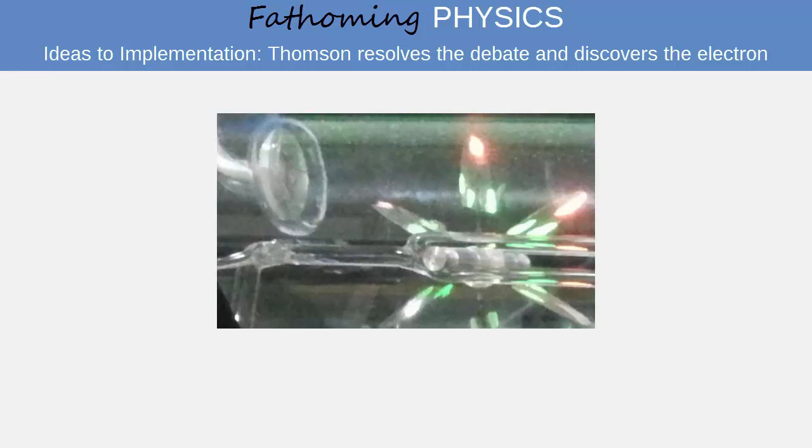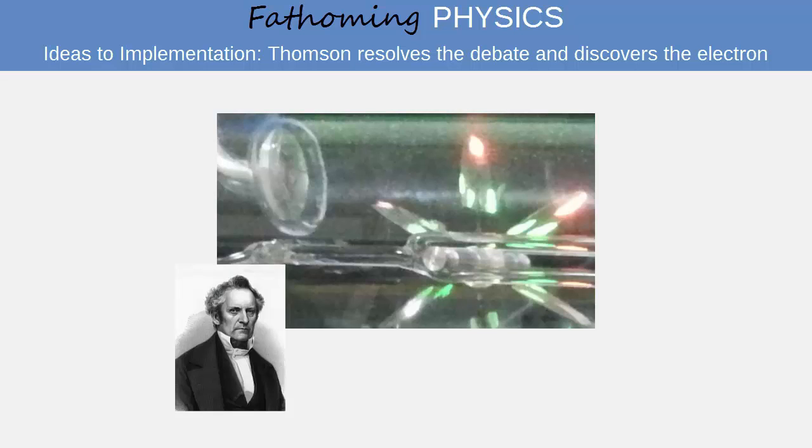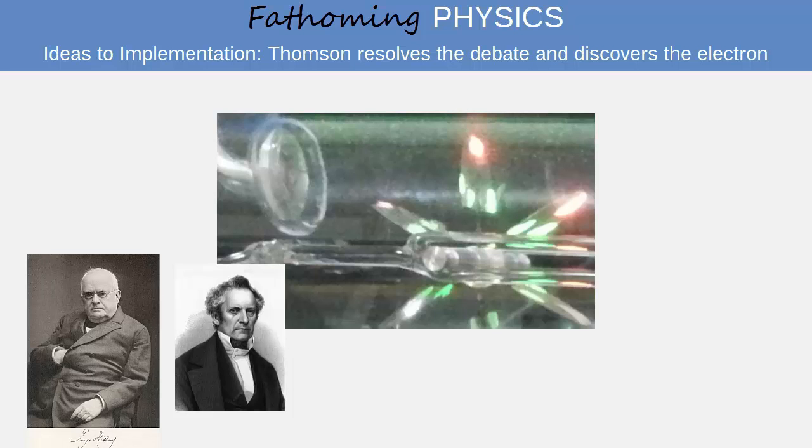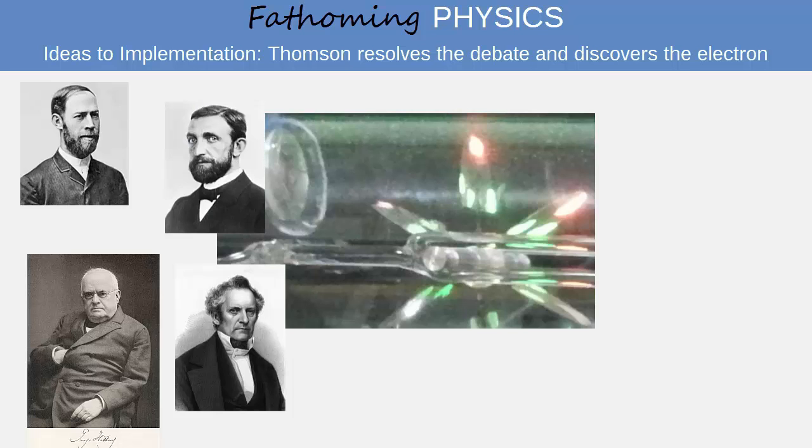Last lesson we examined the evidence uncovered by German scientists about the nature of cathode rays. Plücher discovered cathode rays and demonstrated that they are deflected by magnetic fields. Hittorf demonstrated that they cast sharply defined shadows, so must travel in a straight line. Hertz searched for deflection in an electric field and could detect none. Finally, Leonard demonstrated that the rays could pass through thin metal foil windows in the cathode ray tube and travel a short distance through the air.